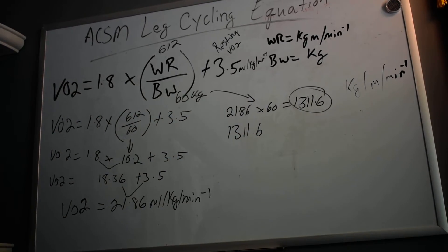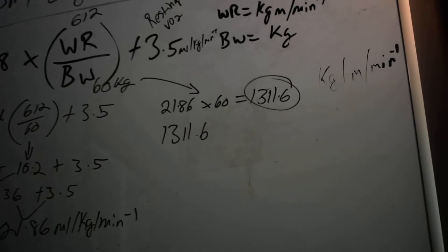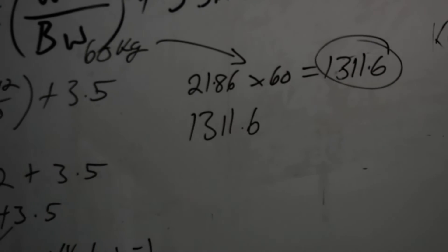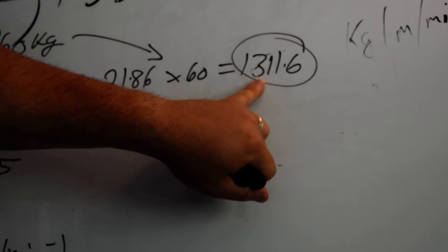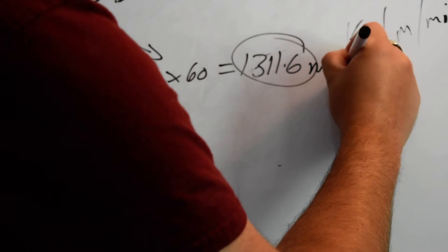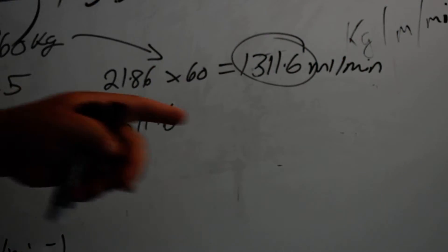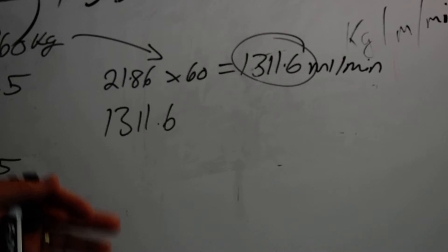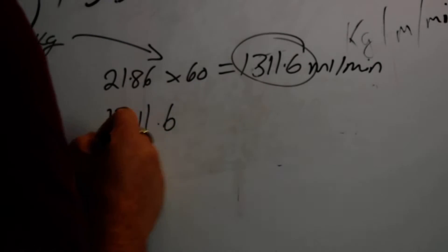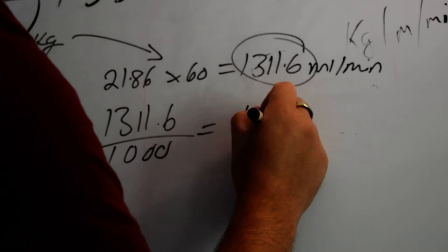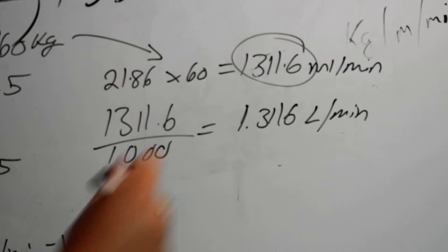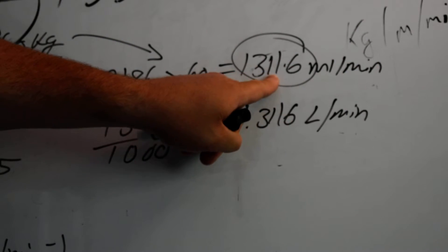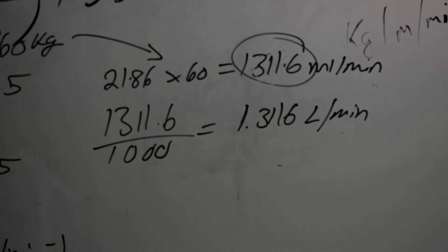What we've done is convert from milliliters per kilogram per minute to milliliters per minute. Since there are 1000 milliliters in one liter, dividing by 1000 gets us to 1.3116 liters per minute. Both milliliters per minute and liters per minute are absolute representations of VO2, but we need to be in liters per minute to do a caloric expenditure estimation.